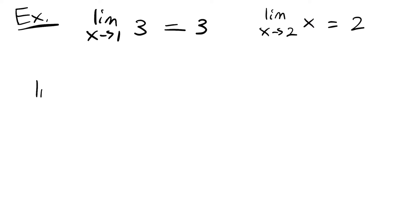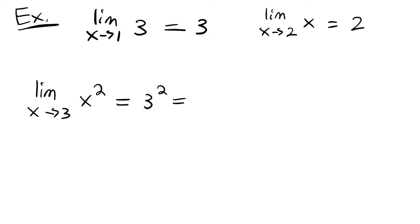Now let's look at the limit as x approaches 3 of x squared. This is another rule — if we have a function that is raised to a power and we plug in the x value, we just have to take it to that power. So in this case, our answer would be 3 squared, which we know to be 9.